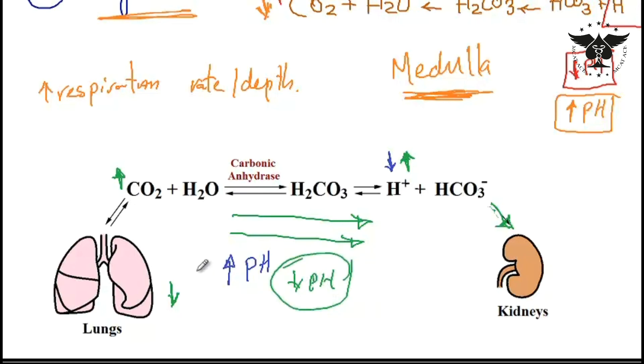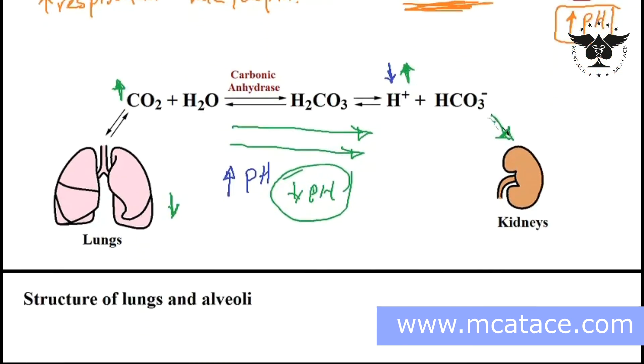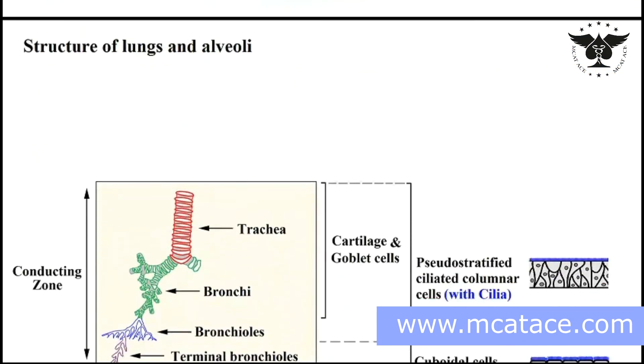My point here is that the lungs and the kidneys work in conjunction in order to regulate the pH of our blood. The next topic is structure of the lungs and alveoli.